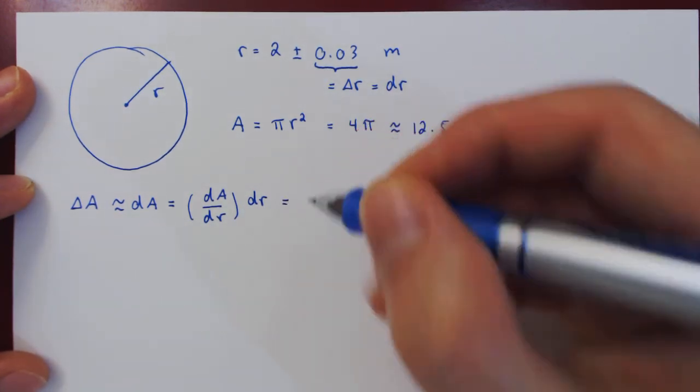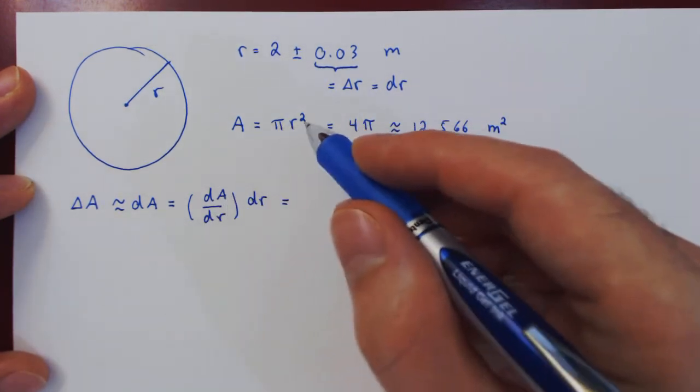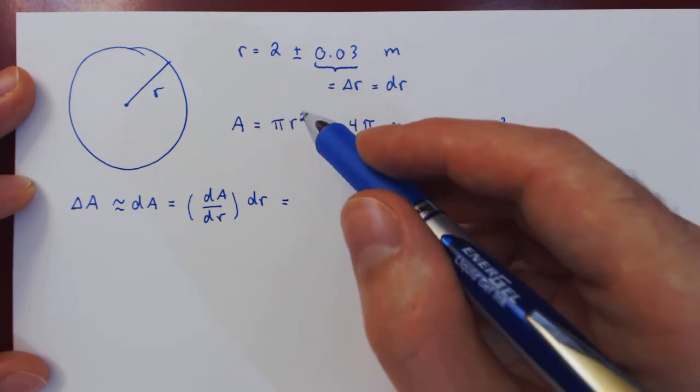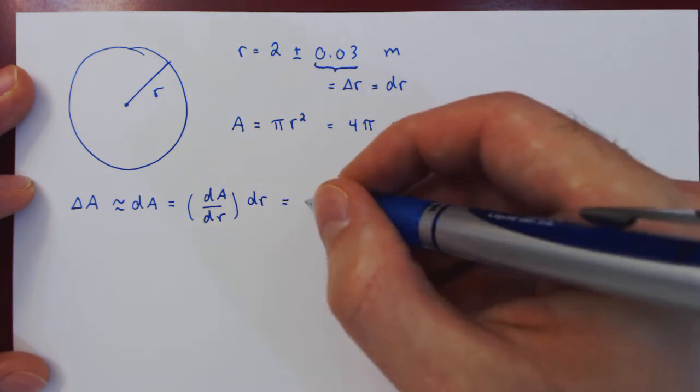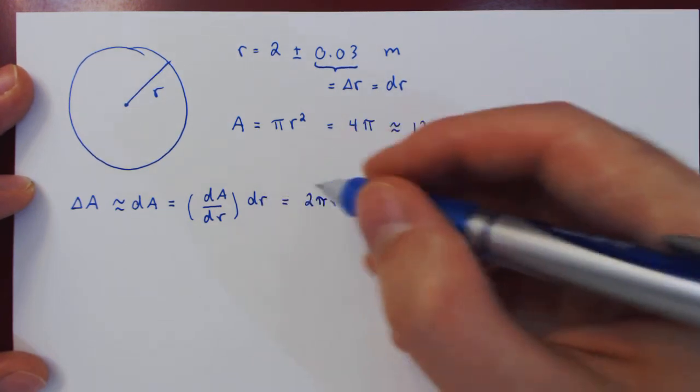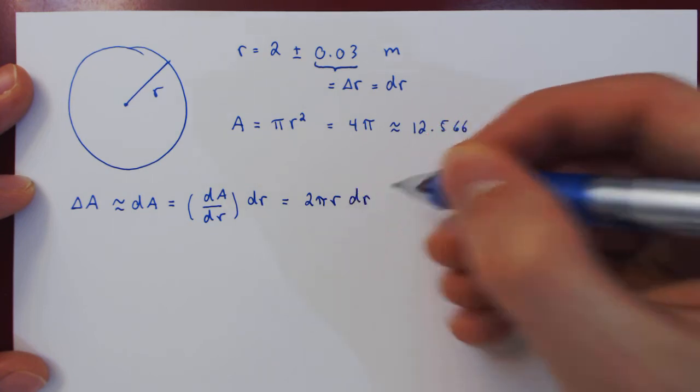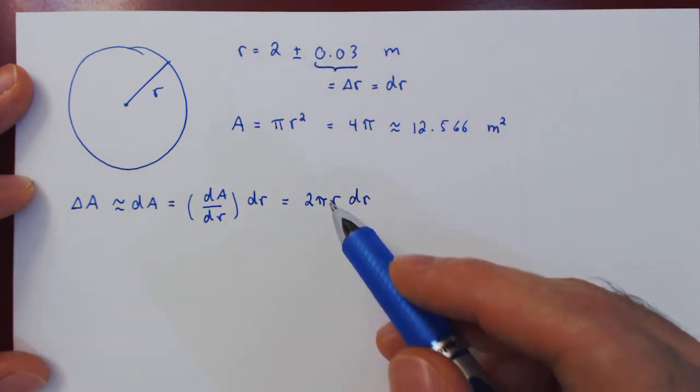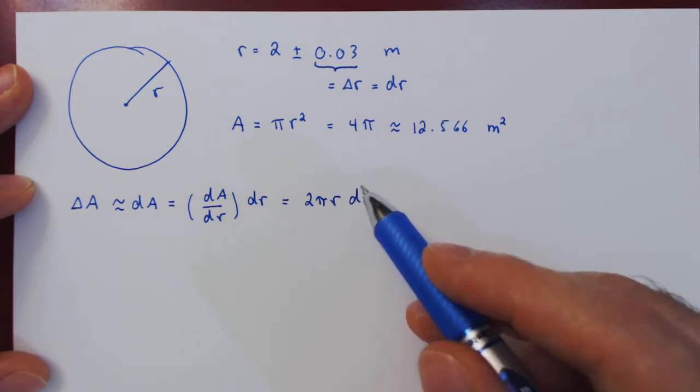Now let's differentiate A with respect to r. Pi is a constant multiple. This gives us by the power rule 2 pi r times dr. We now have the differential of the area for any value of r and any change in r, so we can evaluate.